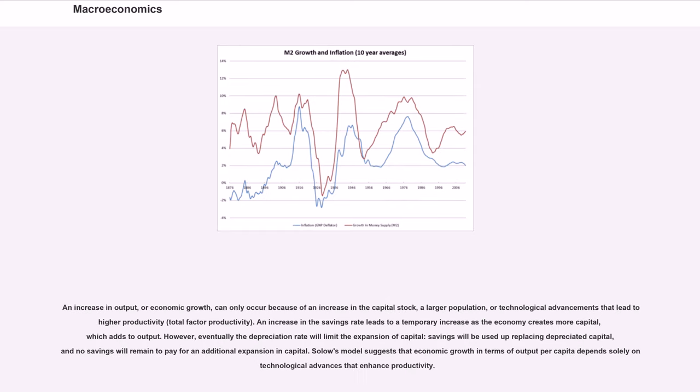An increase in output, or economic growth, can only occur because of an increase in the capital stock, a larger population, or technological advancements that lead to higher productivity (total factor productivity).